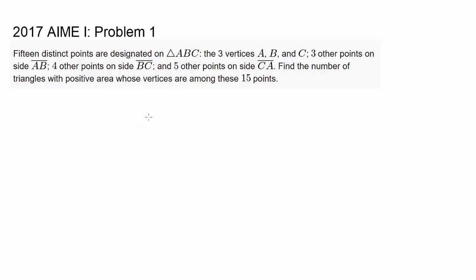Let's try out the 2017 AMC problem 1. There are 15 distinct points assigned on triangle ABC — distinct means different, so we have 15 different points on our triangle ABC.